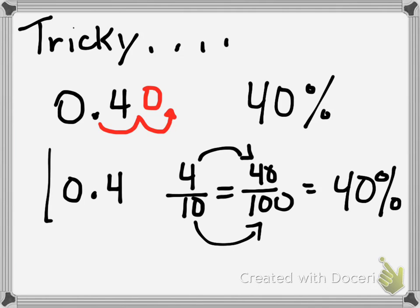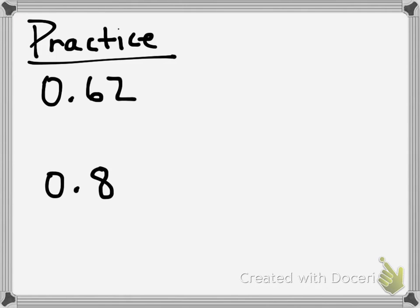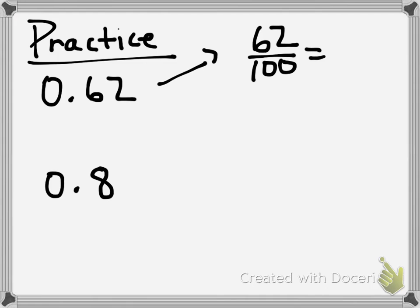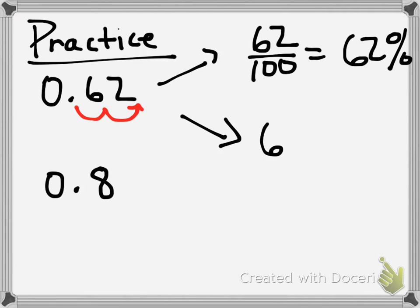A couple of practice problems. Here I have sixty-two hundredths (0.62). Two ways: number one, as a fraction — sixty-two over one hundred — and I know that's equal to sixty-two percent. The other way, our decimal method, is to move the decimal point two spots to the right. After moving two spots, I would have sixty-two, and then I put my percent symbol in — sixty-two percent.